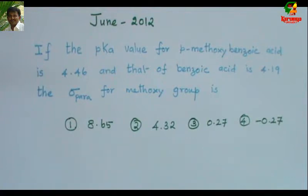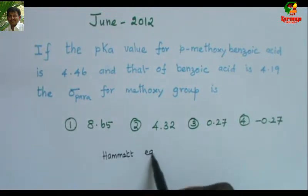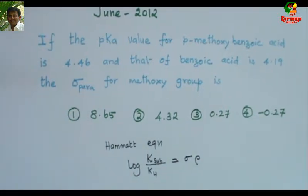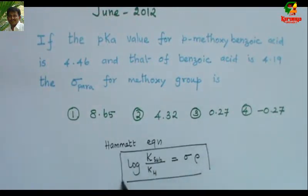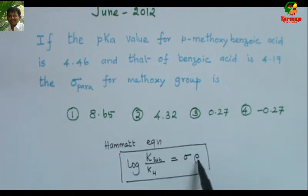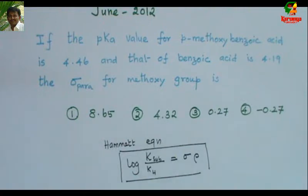In order to solve this, you should know the Hammett equation. The Hammett equation is: log(k substituted / k_H) = sigma × rho. Here k is the equilibrium constant, sigma is the substituent constant, and rho is the reaction constant. Basically, Hammett tried to quantify the effect of the substituent in a reaction, and he arrived at this equation.